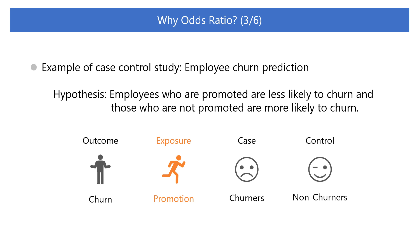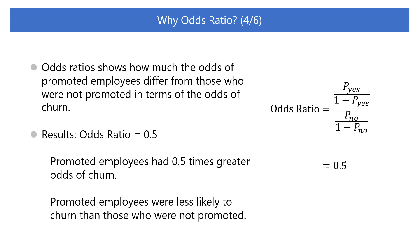The researcher then compares the presence or absence of promotions between employees who churned and who did not churn to assess the impact of promotions on employee churn. Odds ratios will be calculated to analyze how much the odds of employees who have been promoted differ from those who are not promoted in terms of the odds of churn. If the results show that employees who are promoted have 0.5 times the odds of churn compared to those who are not promoted — that is, the odds ratio equals 0.5 — this would suggest that employees who are promoted were less likely to leave than those who are not promoted.